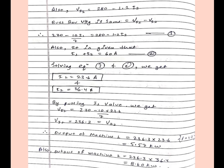After solving these two equations we will get I1 equals 23.6 ampere and I2 equals 36.4 ampere. Now we can put I1 value in above equation, we will get VI1 equals 236.3 and that is also our VI2.